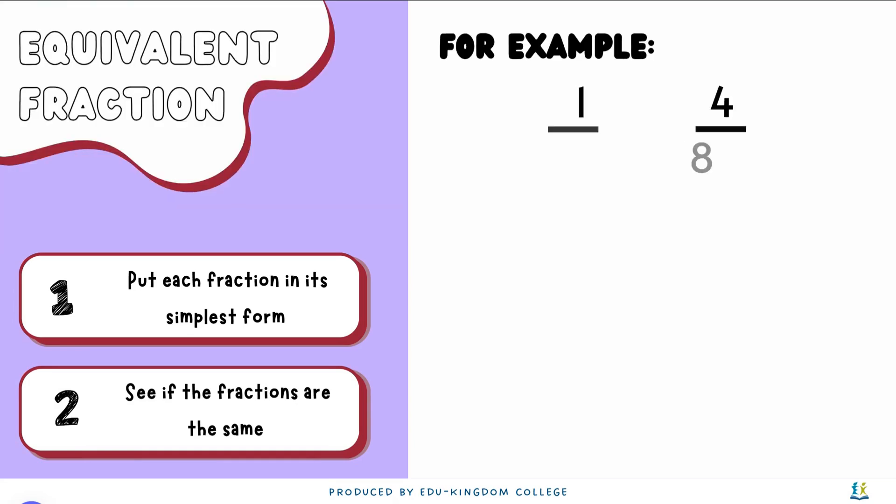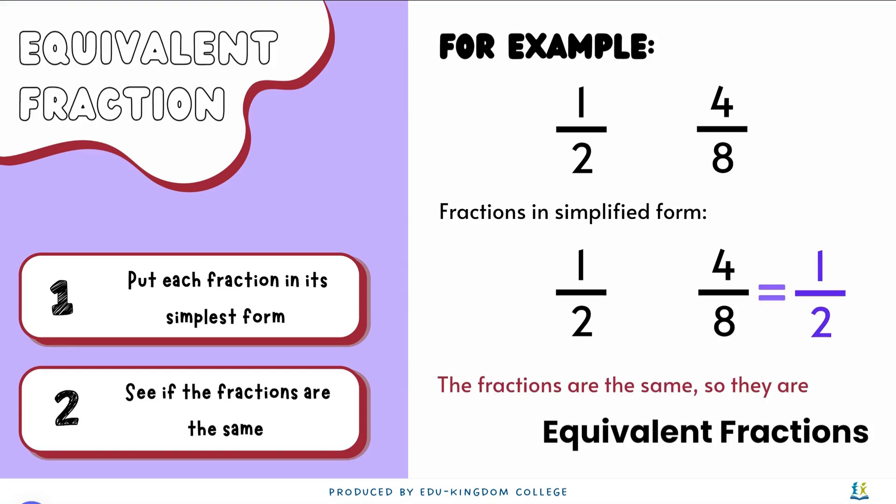We have two fractions over here on the right, a half and 4 over 8. Using the steps from earlier on simplifying fractions, we can see the simplified form of both a half and 4 over 8 is going to be a half. So the fractions are equivalent fractions.